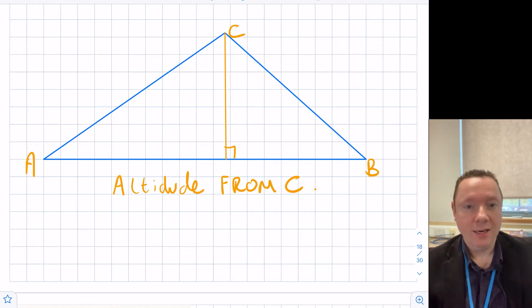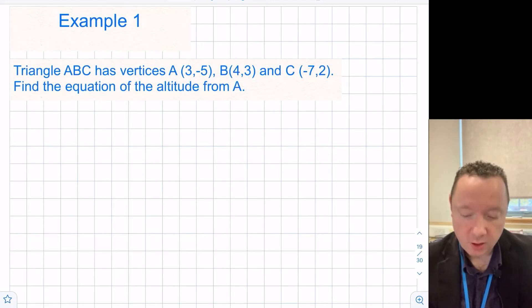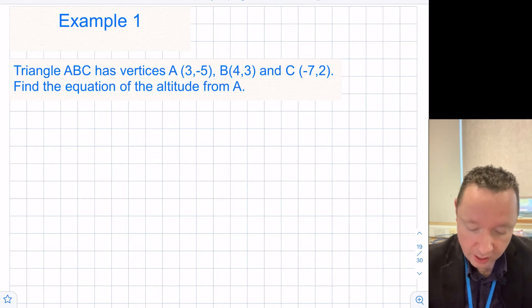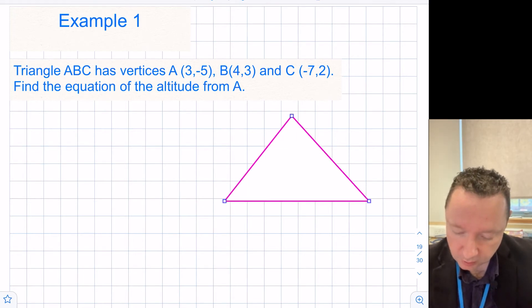And that's what we're going to look at now with an example. Example 1 says triangle ABC has vertices A (3, -5), B (4, 3), and C (-7, 2). Find the equation of the altitude from A. I always find it handy just to draw a simple sketch of this so that you understand what's going on. So if I just draw a random triangle, I'm not even going to try and plot it properly, just a really quick sketch at the side, just like so. So if I just call the first one A, the second one B, and the third one C.